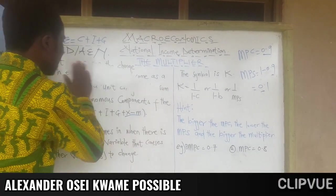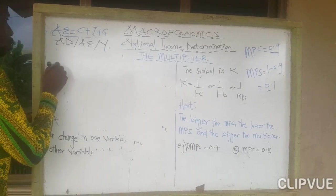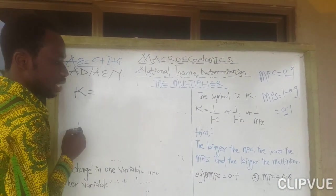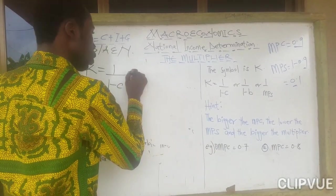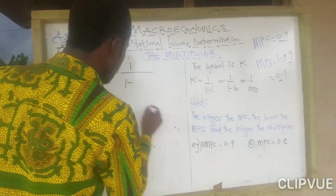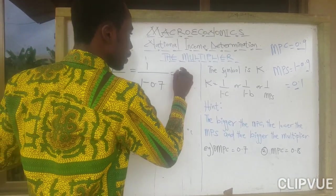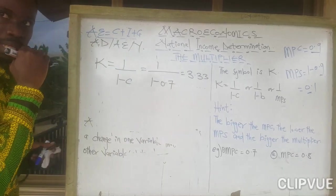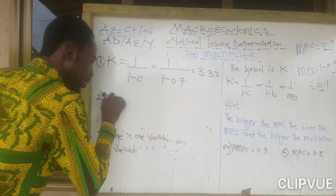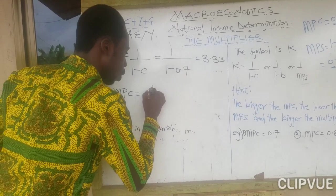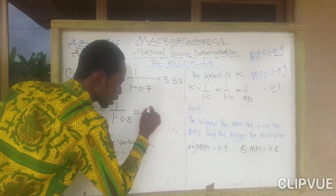Let us use examples. If MPC = 0.7, then K = 1 / (1 − 0.7) = 3.33. In scenario 2, if MPC = 0.8, then K = 1 / (1 − 0.8) = 5.